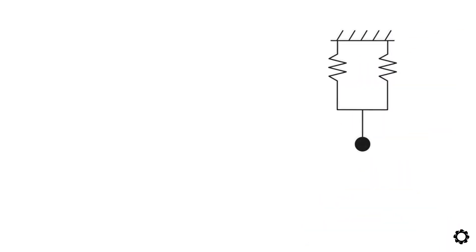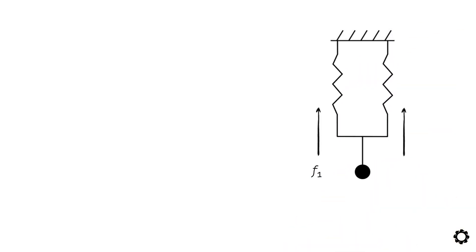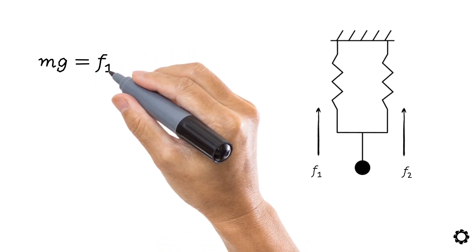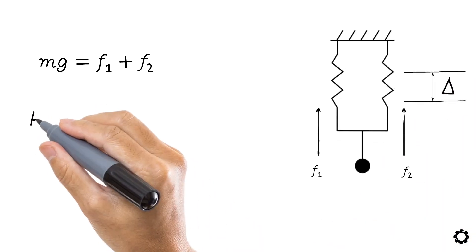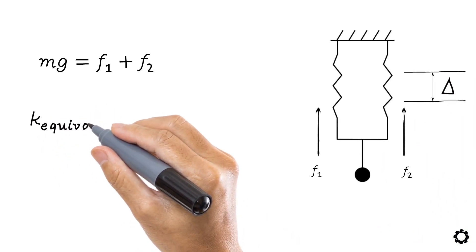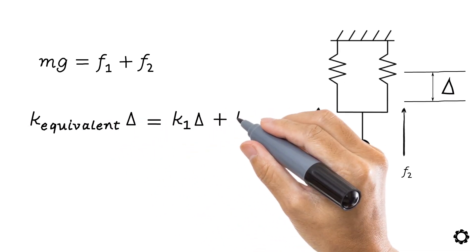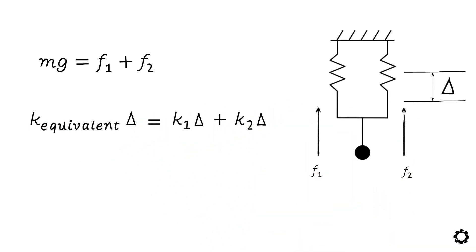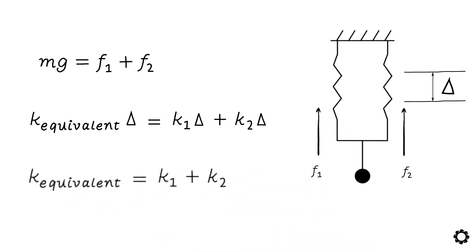In parallel, each of the springs supports part of the force, but both springs undergo the same deflection — that is, m times g equals f1 plus f2. If the springs deflect the same amount, then we can say that k equivalent times delta equals k1 times delta plus k2 times delta. And with just a little more math, in parallel systems: k equivalent equals k1 plus k2.